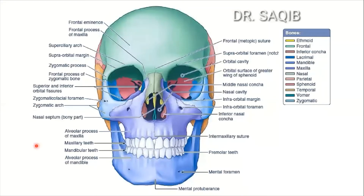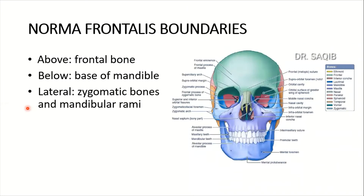Hi, I am Dr. Saki Mansour, and today is the discussion of the last topic of the osteology of the head and neck, which is the Norma Frontalis. So we will discuss first of all its boundaries.